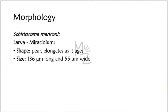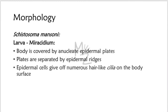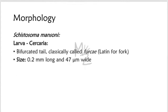The larvae of S. mansoni exist in three stages. The miracidium is pear-shaped and elongates as it ages — 136 micrometers long by 55 micrometers wide. It is covered by ciliated epidermal plates separated by dermal ridges; epidermal cells give off numerous hair-like cilia. The cercaria has a bifurcated tail, classically called furcous (the word furcous means fork in Latin). It is 0.2 millimeters long and 47 micrometers wide.